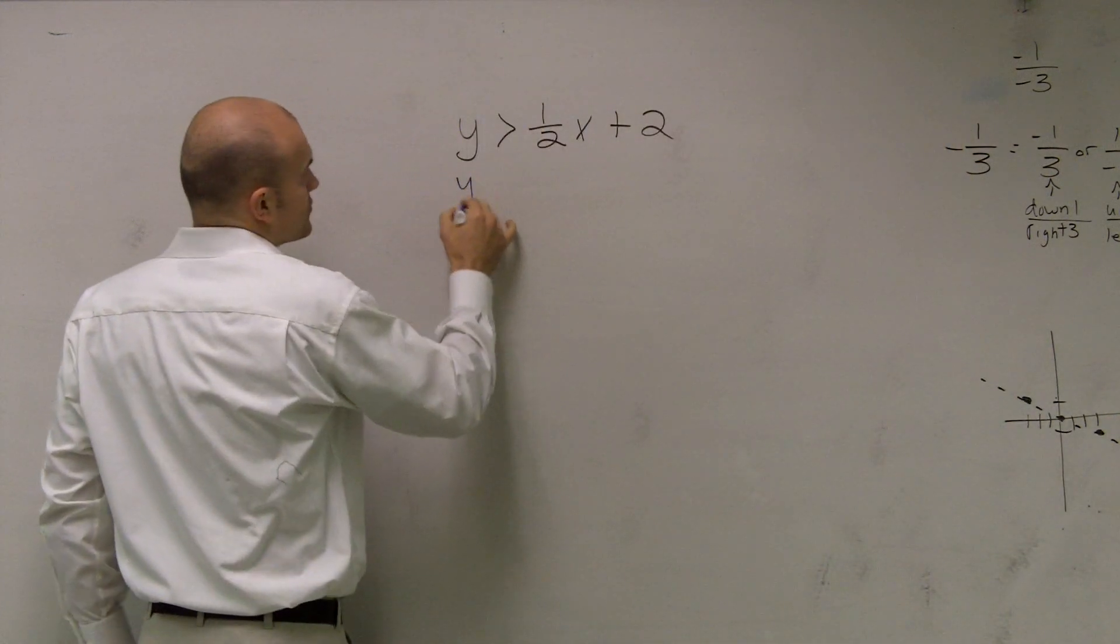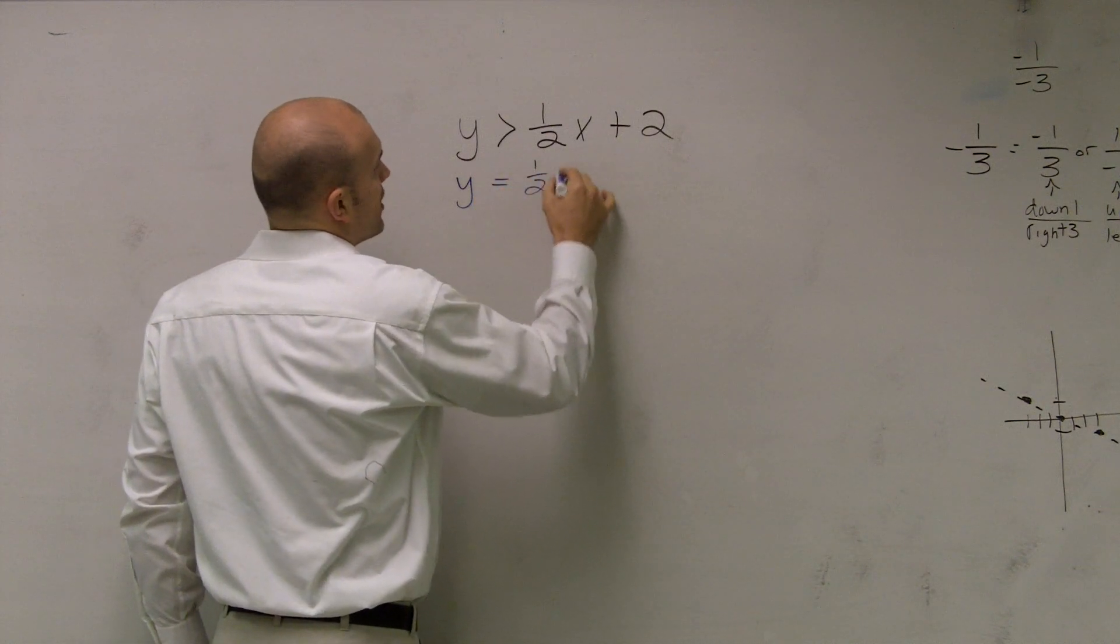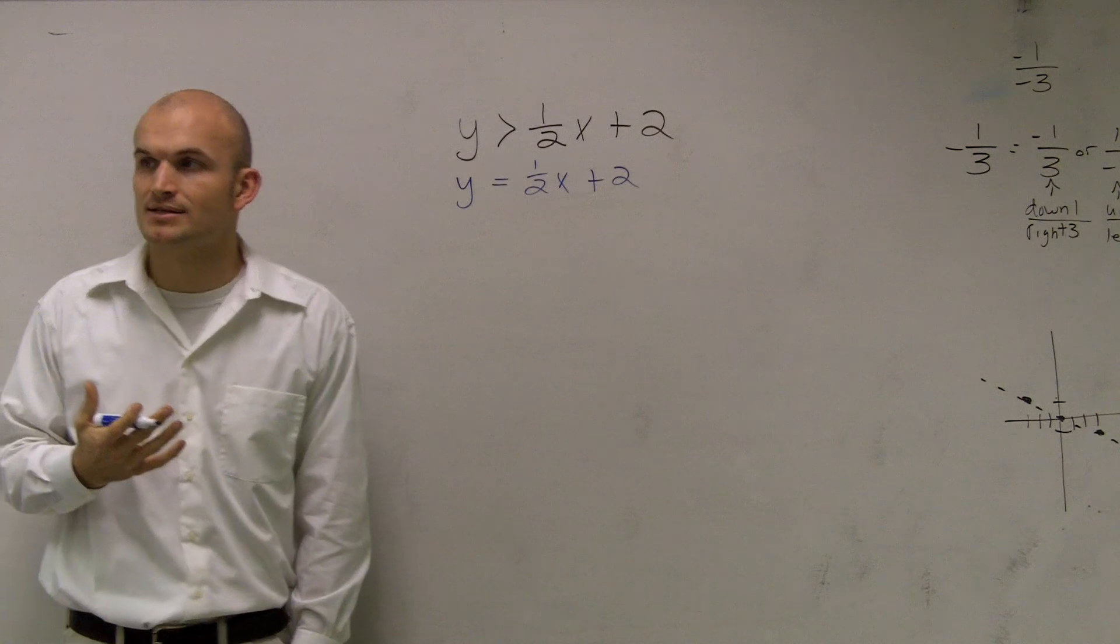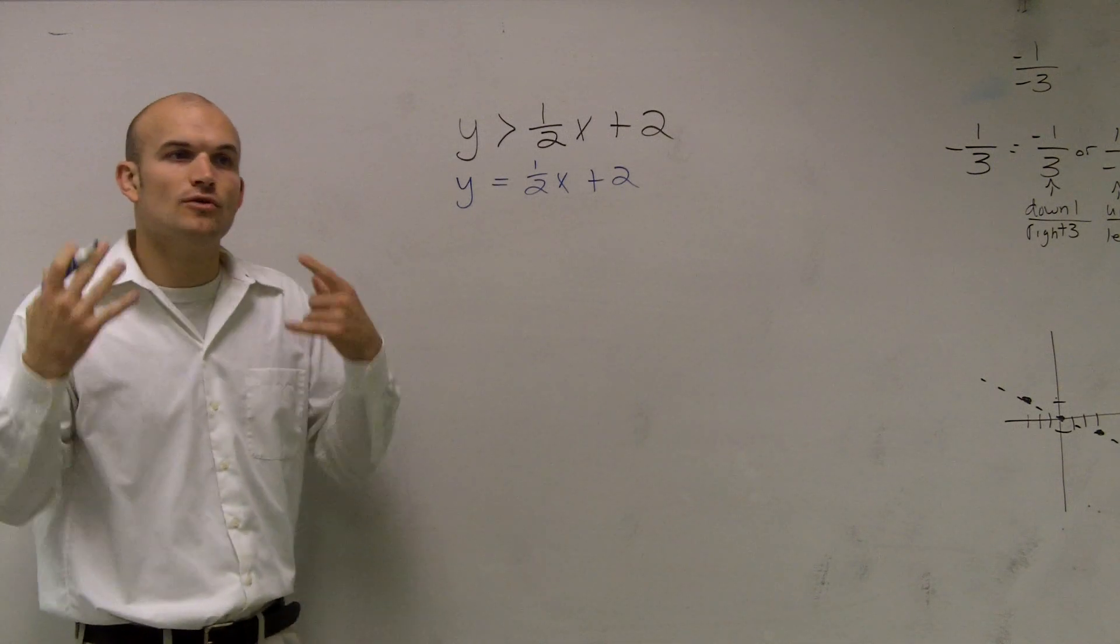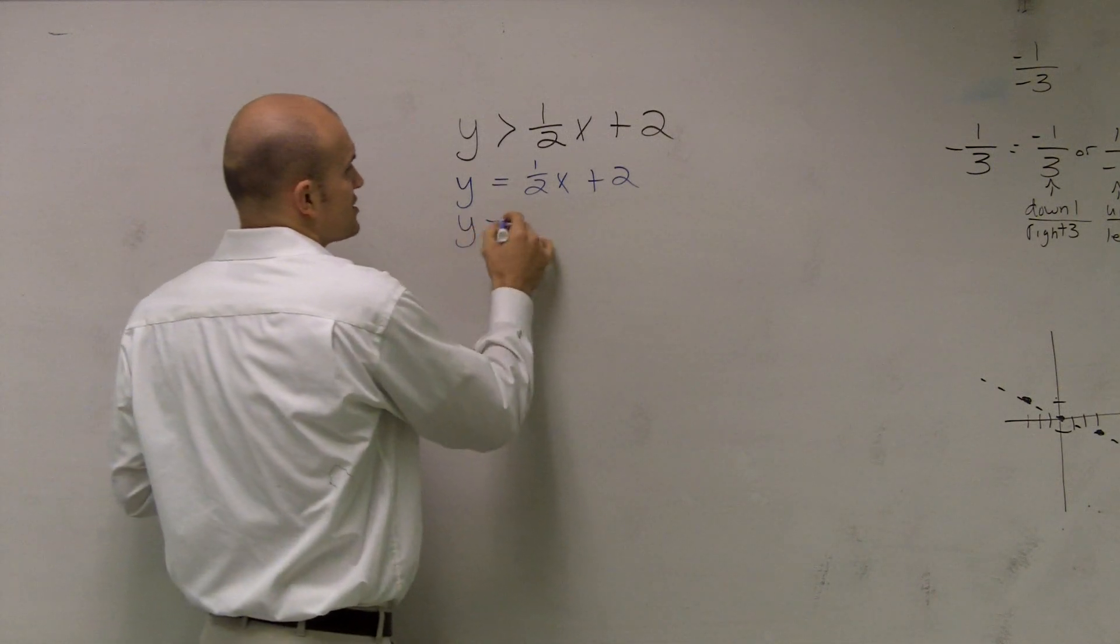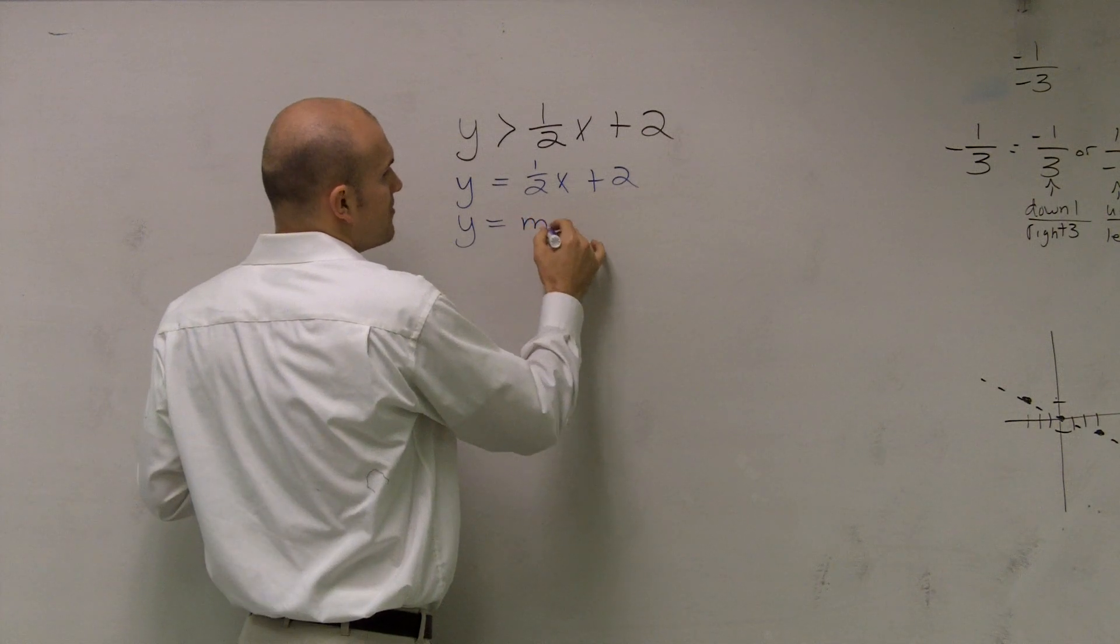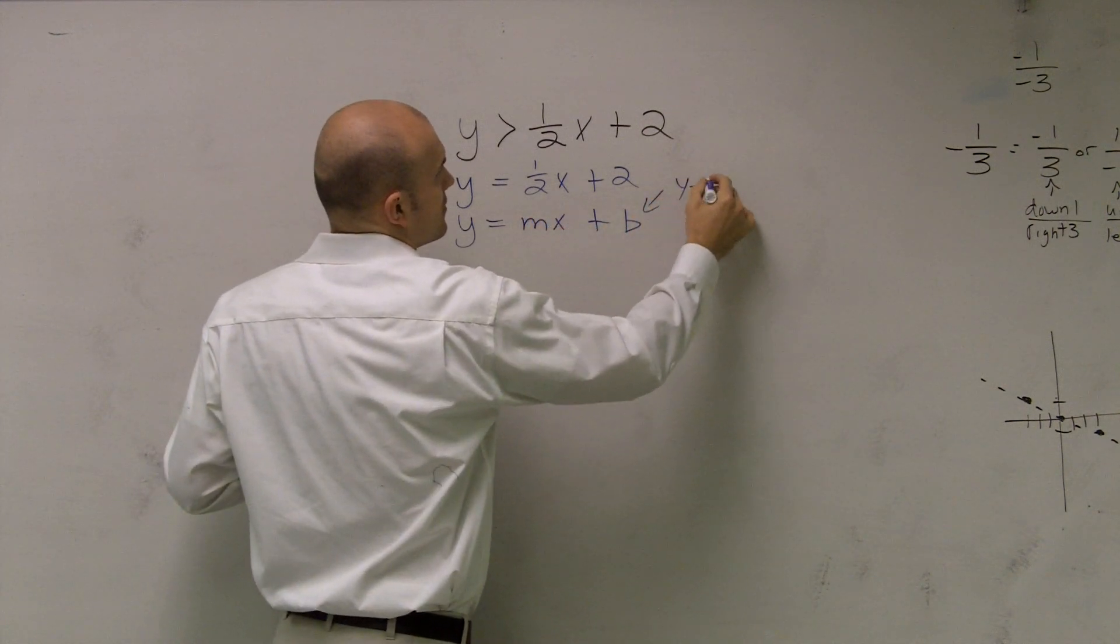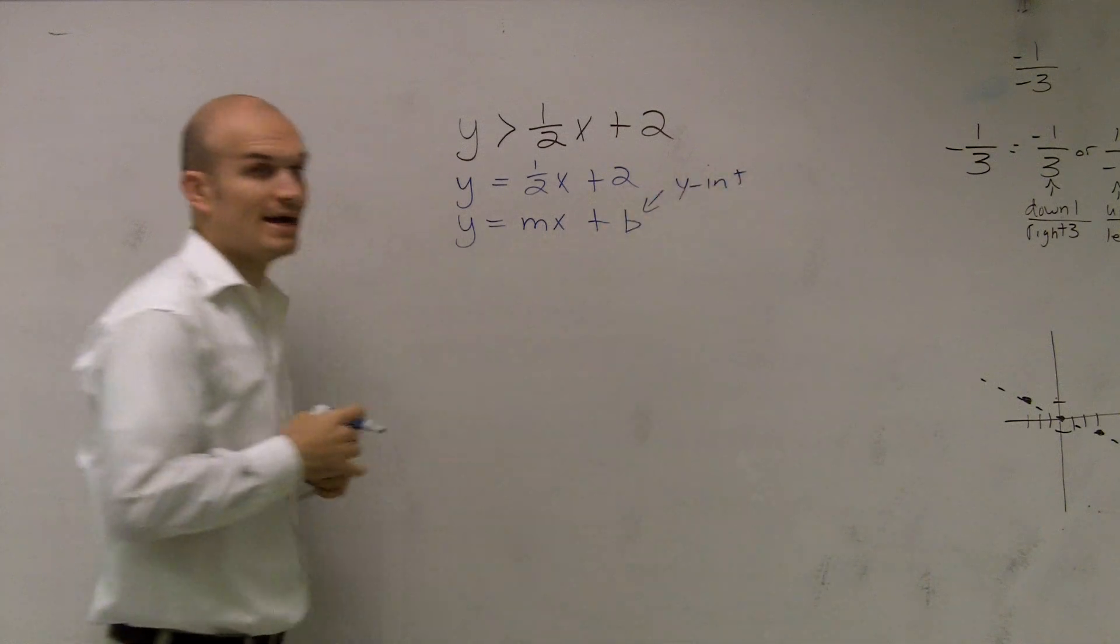So I can write this as y equals 1/2 x plus 2, right? And the reason why we like to write it in our equation, because that should hopefully remember that we can write things in slope-intercept form, right? Remember y equals mx plus b, where b was our y-intercept.